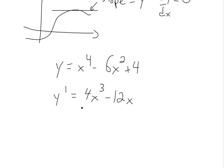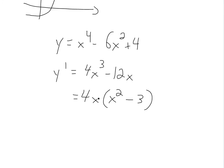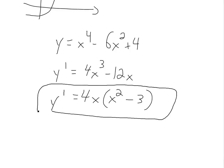We can simplify this further by factoring out 4x from both terms. Dividing out 4x from 4x cubed leaves x squared, and dividing 4x out of 12x leaves 3. So the factored form is 4x times (x squared minus 3), and we know this is equal to 0.